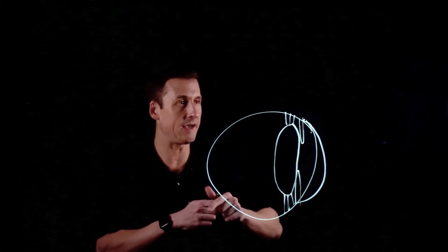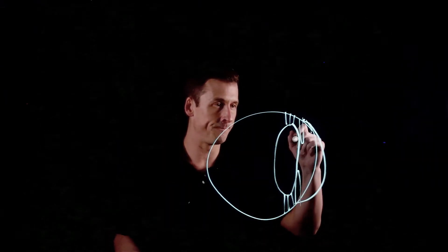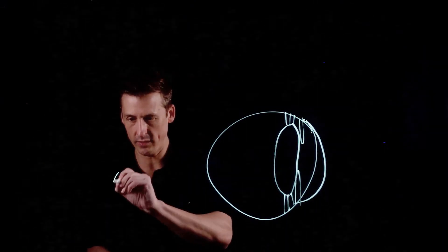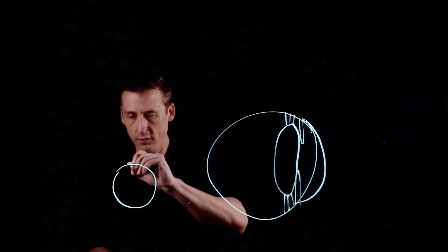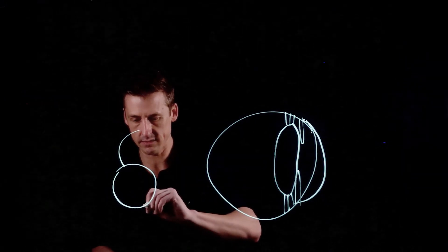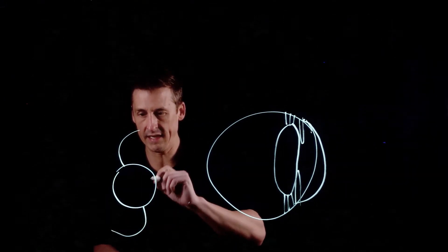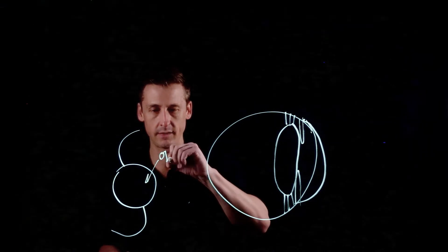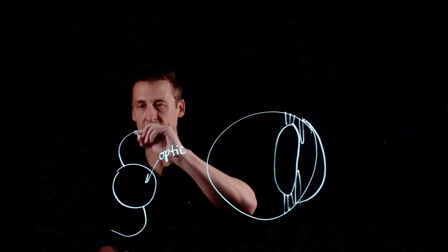The deal with intraocular lens technology is—lenses in general—the one that we replace, they look a bit like this. It's kind of like a hurricane, and this part is called the optic, and these arms here are called haptics.